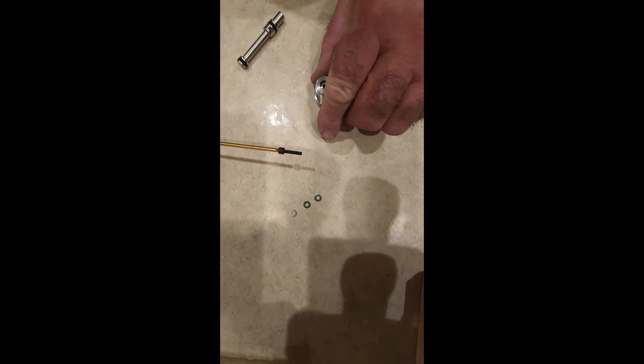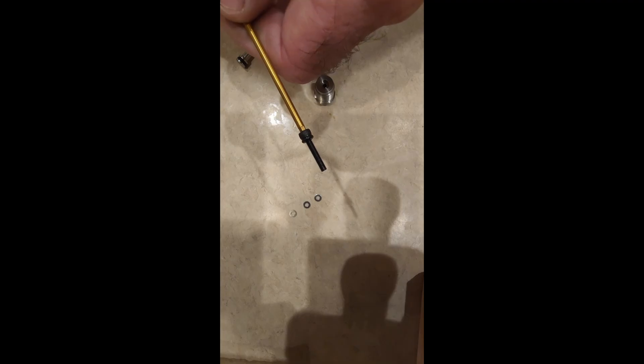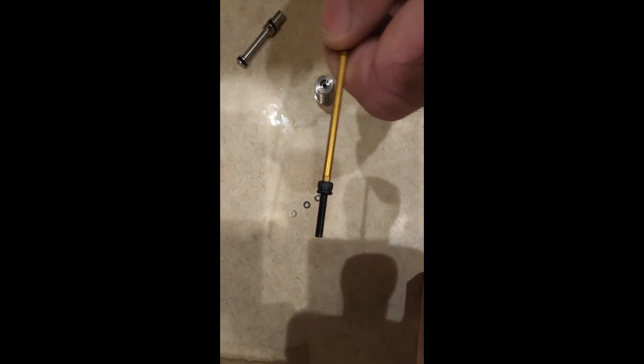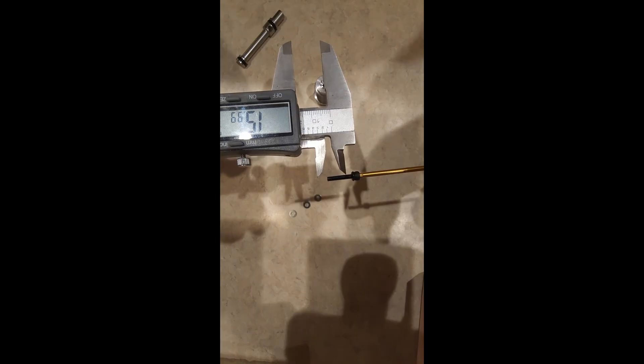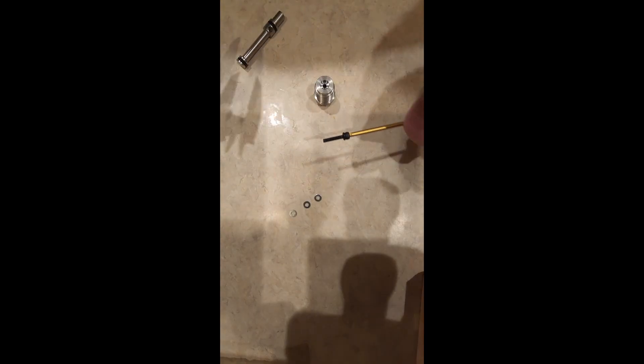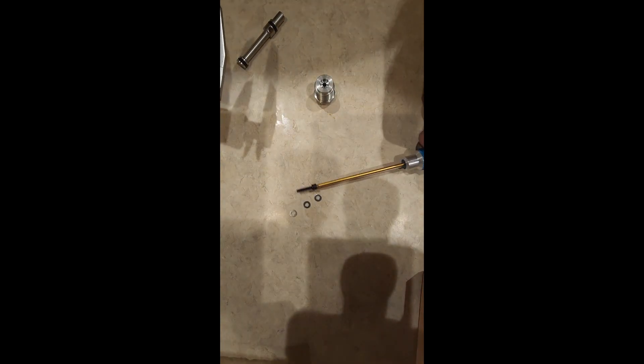And on this screw, you'll see there's an O-ring on it. And this screw is 16 millimeters long. If you have the shorter one, which I believe is 12, and it has Loctite on it, you need to source yourself this longer screw.